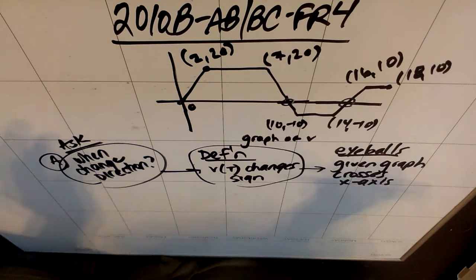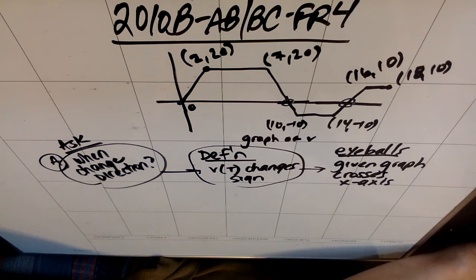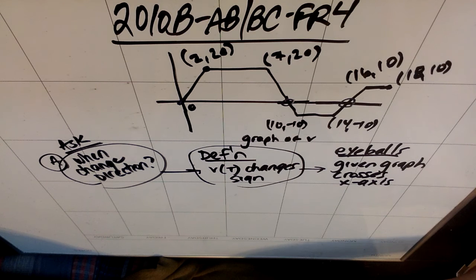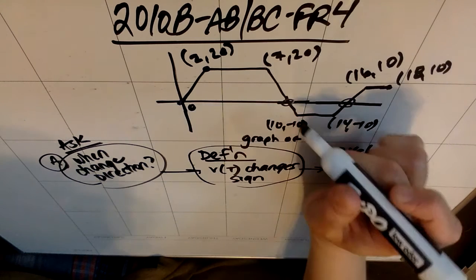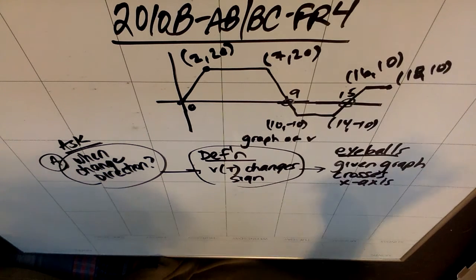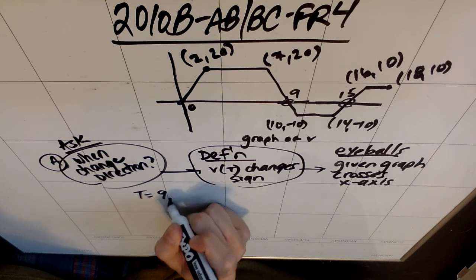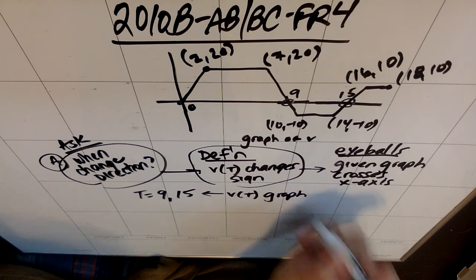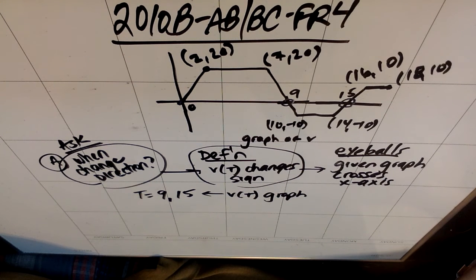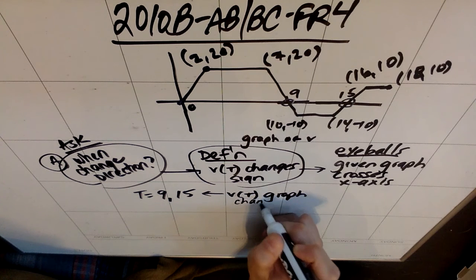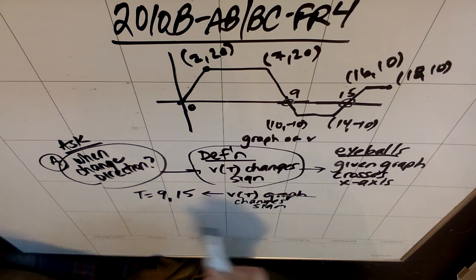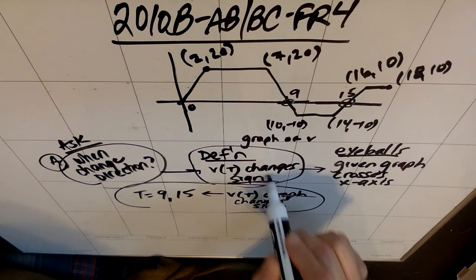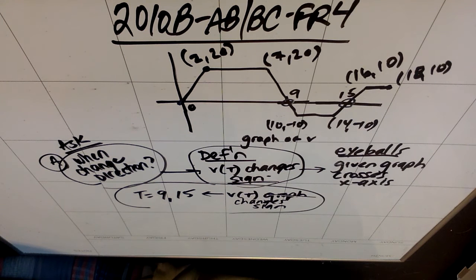You can see either by looking at the graph — and their graph is definitely better than mine — that these two zeros happen at t equals 9 and t equals 15. I just wanted to confirm I didn't have to calculate them. So my answer is at T equals 9 and T equals 15, and my reason is that the V of T graph changes sign. You can just say V of T changes sign. So T equals 9 and T equals 15.